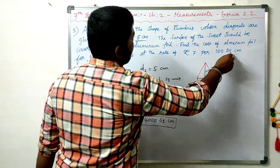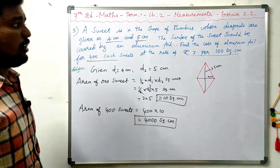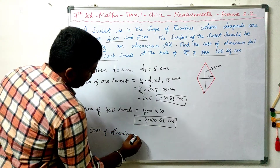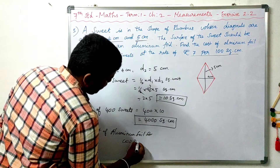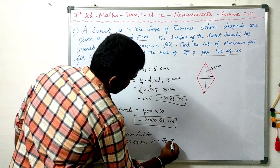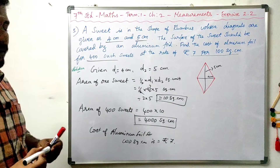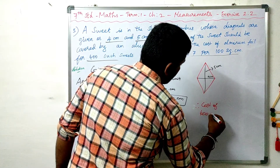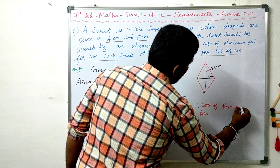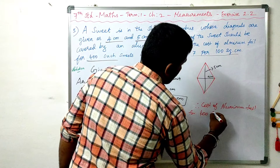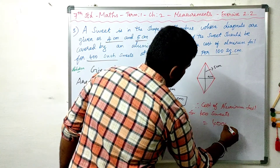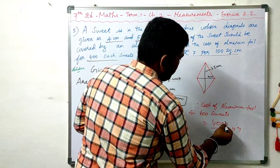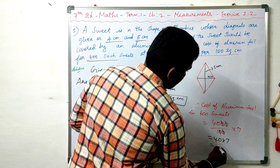Cost of aluminum foil: 100 square centimeters costs Rs. 7. So for 4000 square centimeters: cost = 4000 divided by 100, into 7. Cancel: 40 into 7 = 280. So the total cost for 400 suites is Rs. 280.